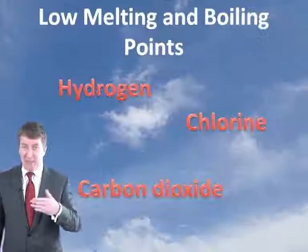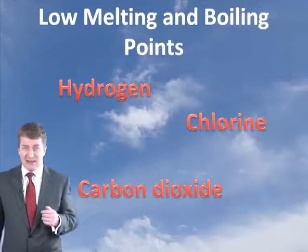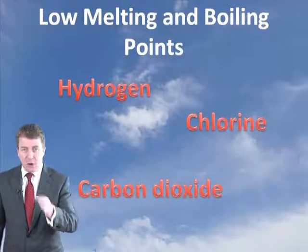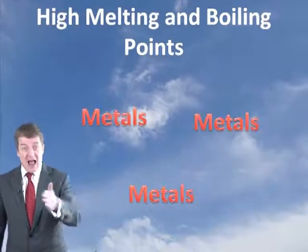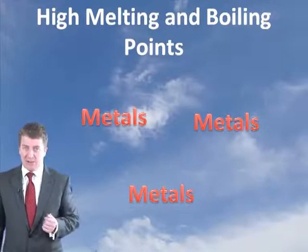Substances turn from solid to liquid at their melting points and from a liquid to a gas at their boiling points. What you generally find is that gases on our planet such as hydrogen, chlorine, and carbon dioxide all have very low melting points and very low boiling points, whereas metals have very high melting points and very high boiling points.